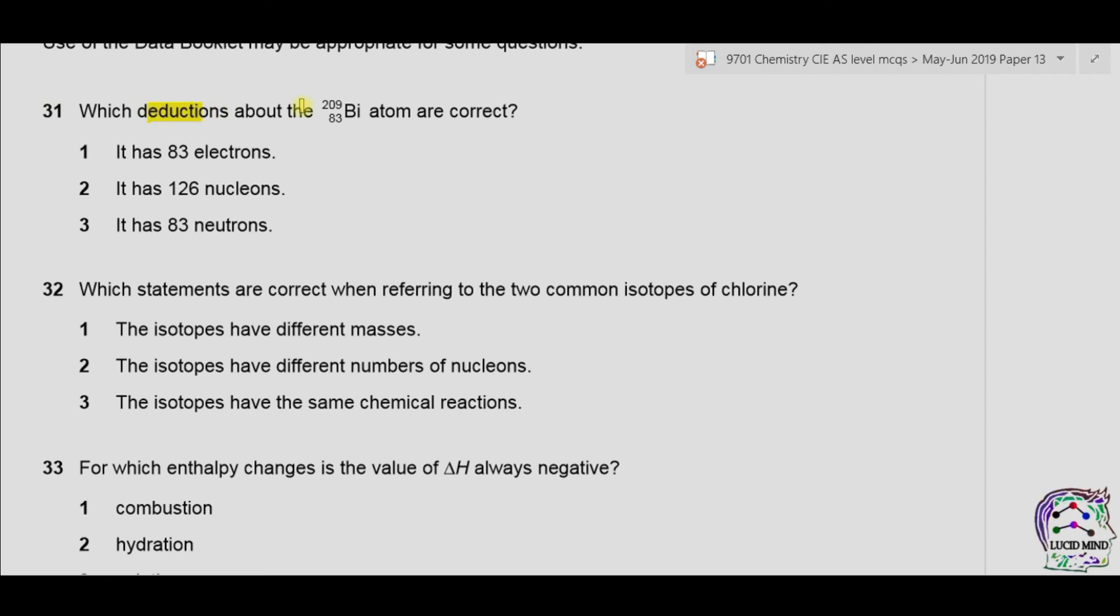Question 31. Which deductions about bismuth 209-83 atom are correct? Number 1. It has 83 electrons. As we can see, the atomic number is 83 and there is no charge. So there must be 83 electrons as there are 83 protons. Number 2. It has 126 nucleons. As we can see that the nucleon number is 209. So therefore, 2 is wrong. Number 3. It has 83 neutrons. Now, neutrons can be obtained by subtracting nucleon number from atomic number. So it will be 209-83 which is equal to 126. So 3 is also incorrect. As only option 1 is correct, the answer is therefore D.